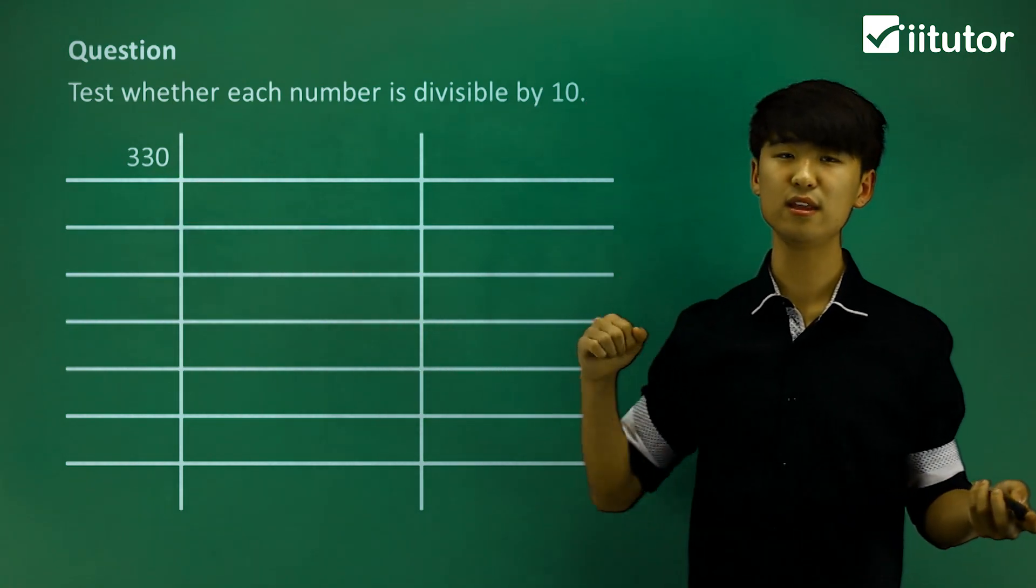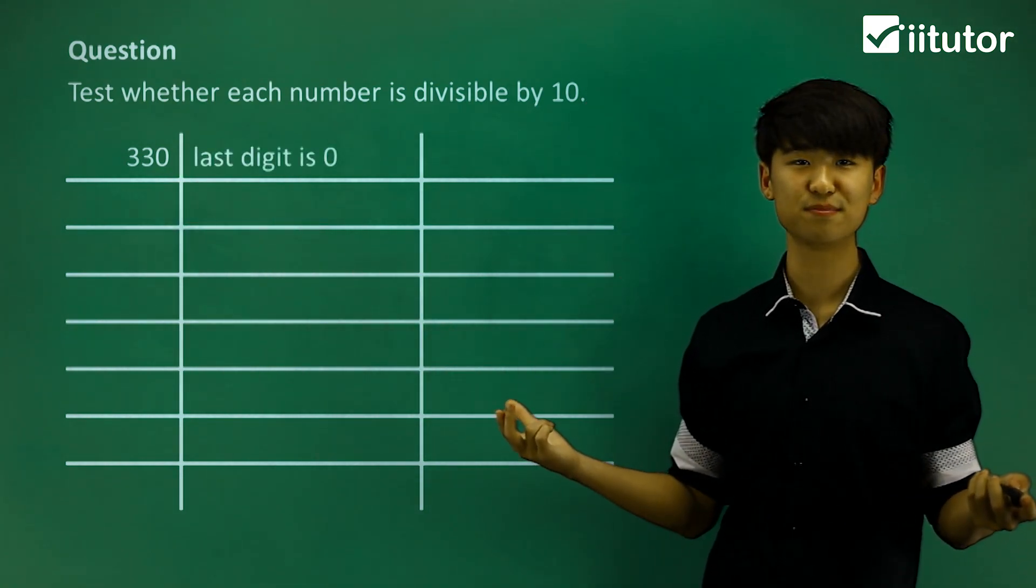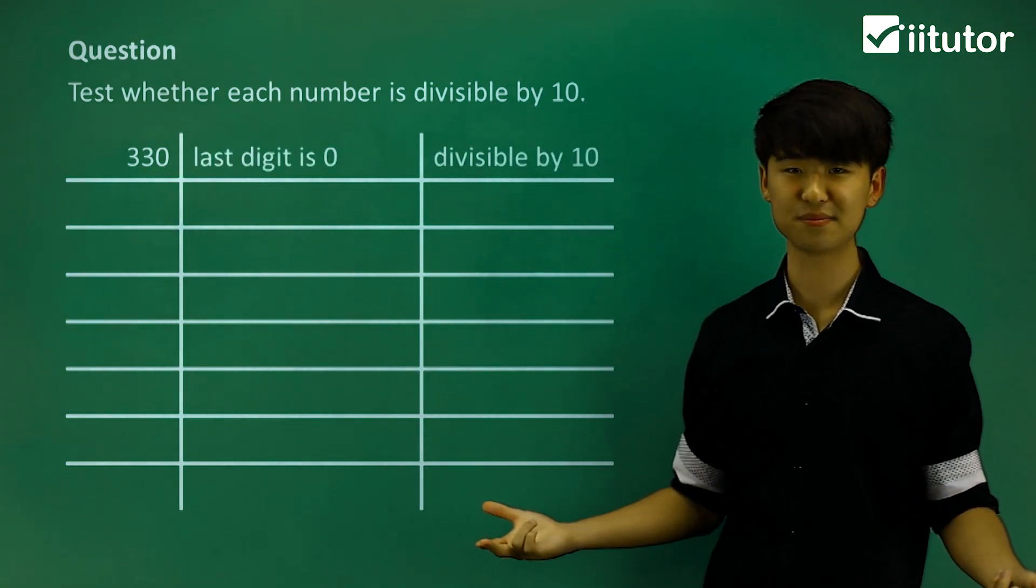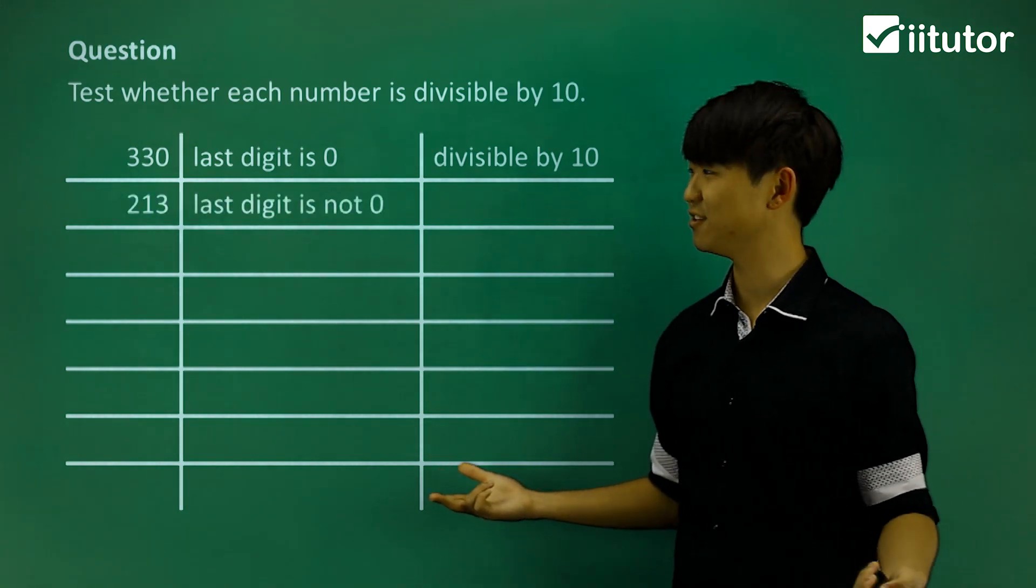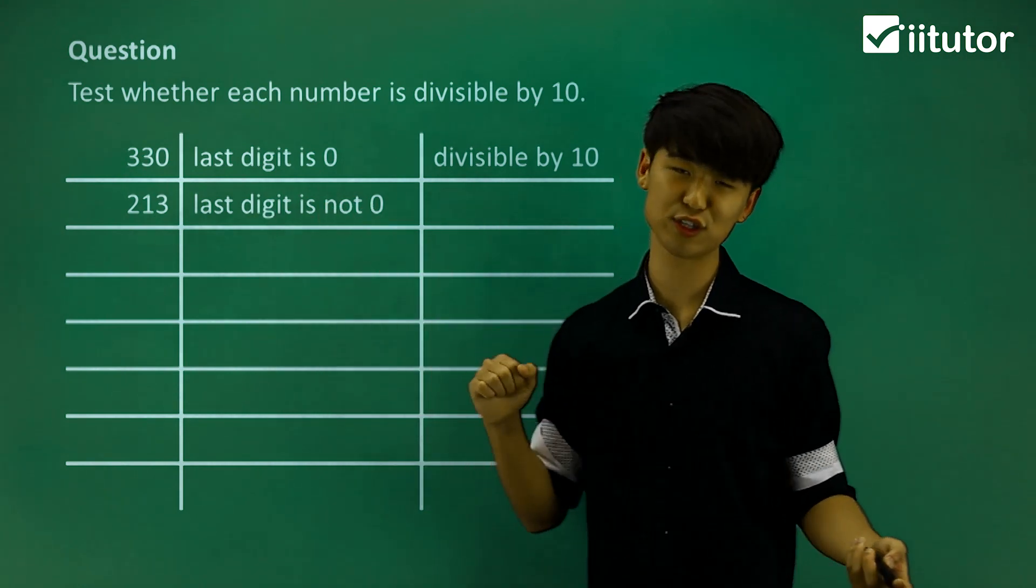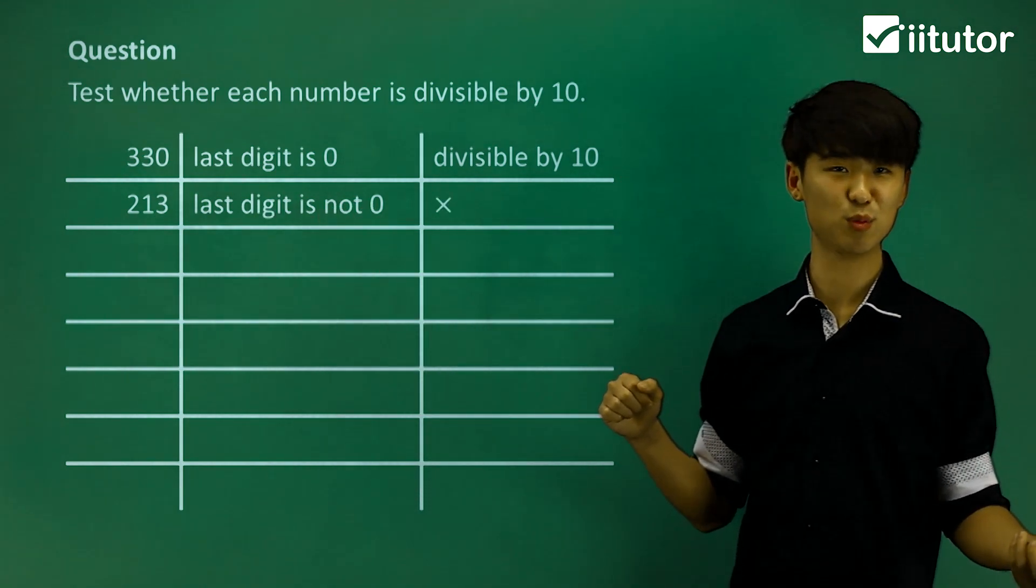So 330, the last digit is 0, then this is divisible by 10. This number does not have 0 as its last digit, then 213 is not divisible by 10.